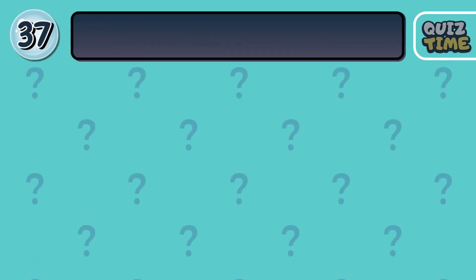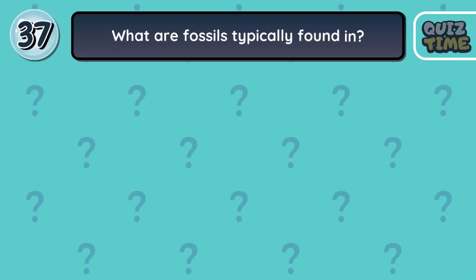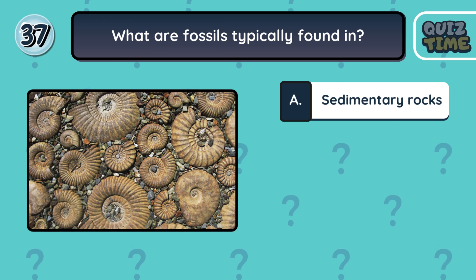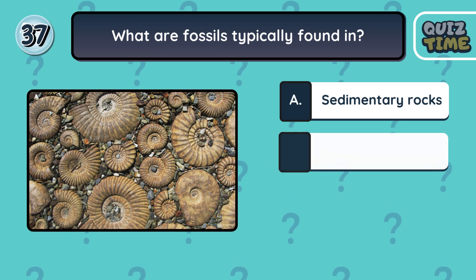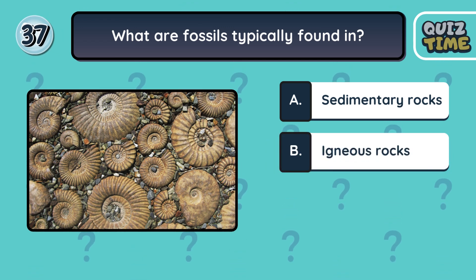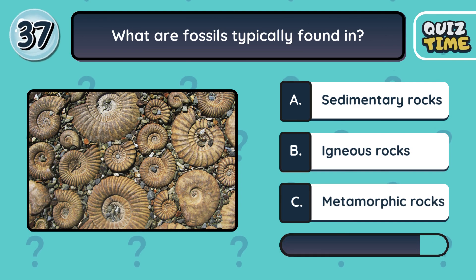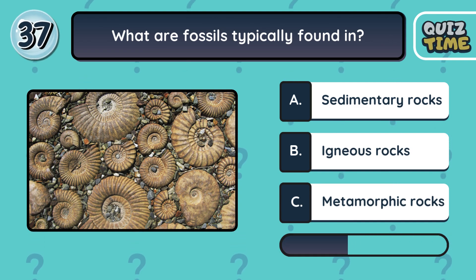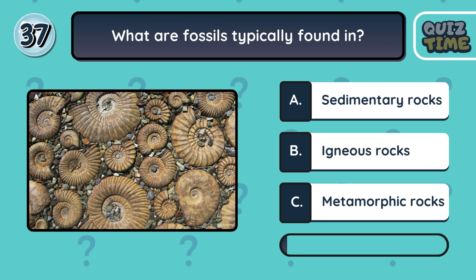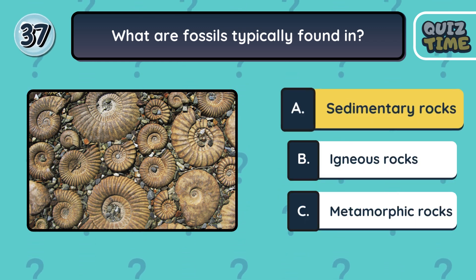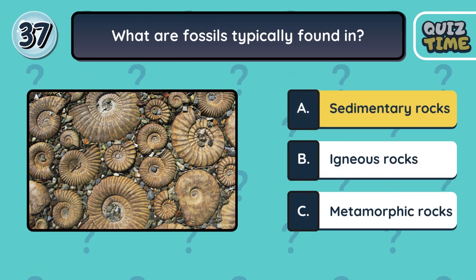Number 37. What are fossils typically found in? A. Sedimentary rocks. B. Igneous rocks. C. Metamorphic rocks. The correct answer is A. Sedimentary rocks.